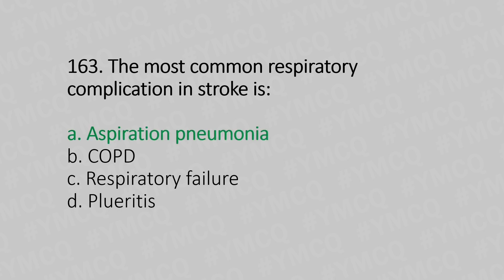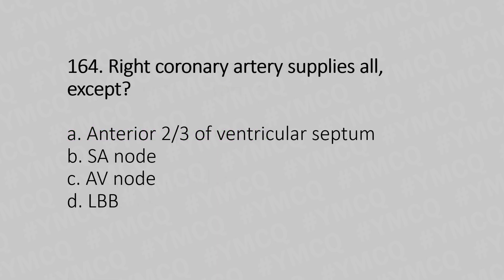Question 164: Right coronary artery supplies all except — Option A: Anterior two-thirds of the ventricular septum, Option B: SA node, Option C: AV node, Option D: LBB. And the answer is Option A, anterior two-thirds of the ventricular septum.